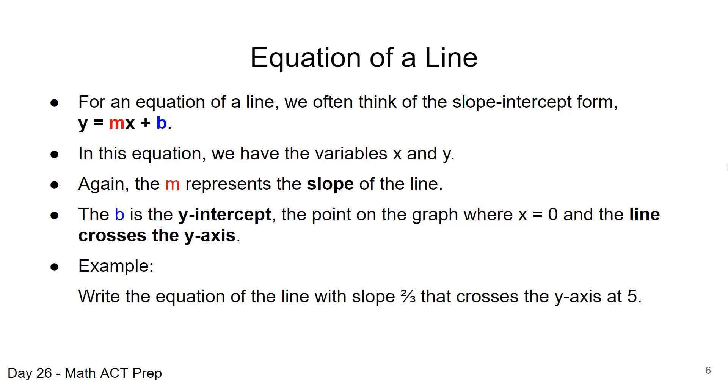So here's an example. You may be asked to write the equation of the line with slope two-thirds that crosses the y-axis at five. So we can set up in slope-intercept form that y equals two-thirds x, two-thirds is our slope m, plus five, that is b.